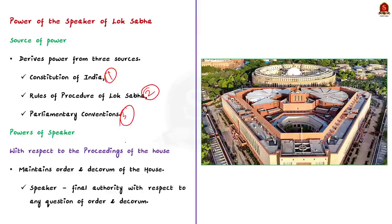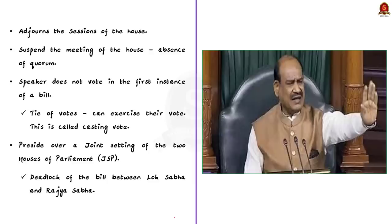With respect to proceedings of the house, the speaker's powers include: firstly, as presiding officer, he or she maintains the order and decorum of the house and is made the final authority on any question of order. Secondly, the speaker adjourns the session and can suspend the meeting in the absence of a quorum — quorum being the minimum strength of the house. Thirdly, the speaker does not vote in the first instance of a bill, but in case of a tie can exercise a casting vote.